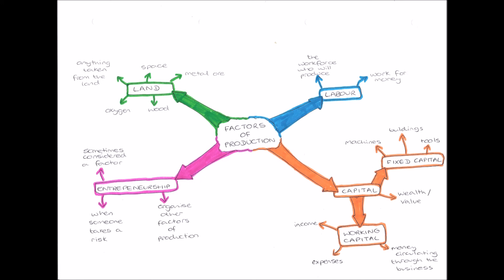So the factors of production are the things we need in order to produce any good or provide any service. They include land, labor, physical capital, and working capital, and entrepreneurs who take a risk and organize these other factors are sometimes considered a factor of production.